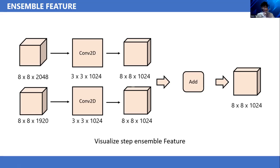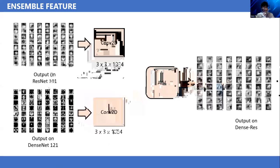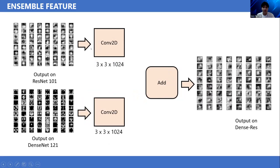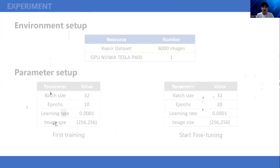This is the output when we visualize features. This is the output on ResNet-101 and this is the output on DenseNet-121. When we pass these two outputs through convolutional 2D, we can see the sum of the two outputs. The output of our proposed architecture shows the feature visualization appears more refined than the features on the previous backbones.